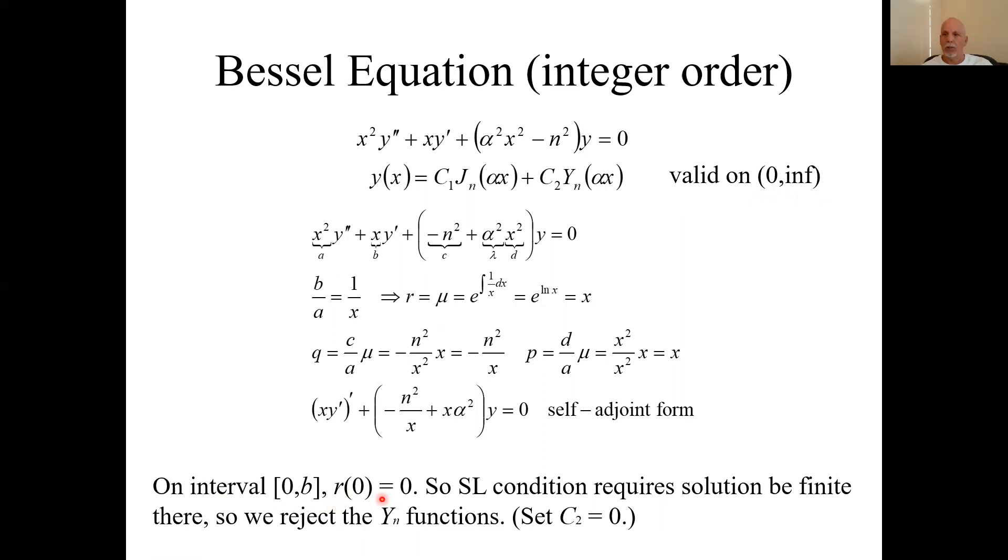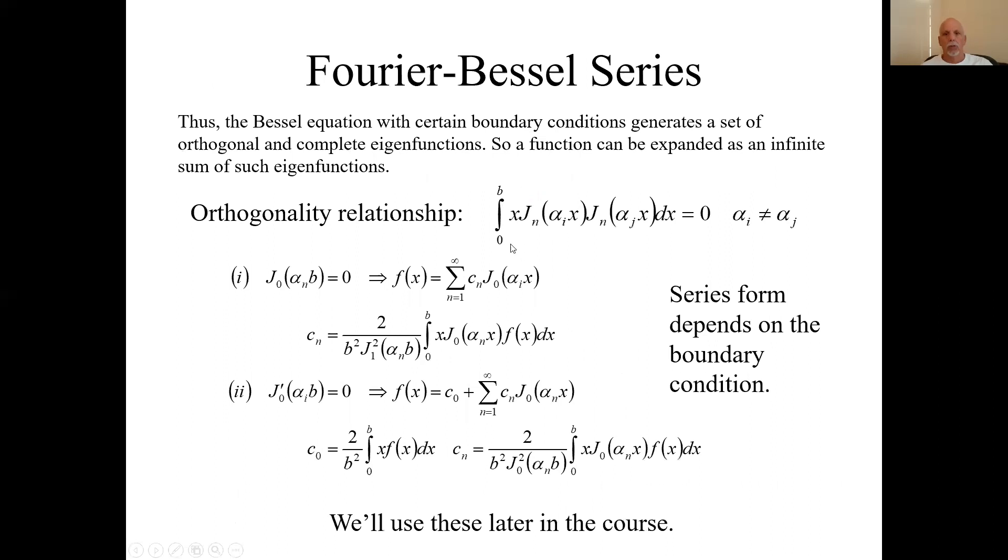Remember, Bessel functions of the second kind are not bounded at x equals zero. So we have to set this C₂ to zero and we're just left with Bessel functions of the first kind. Our eigenvalues are going to be these alphas, and the eigenfunctions are going to be Bessel functions of the first kind. So in general, on that interval from zero to B, here is our orthogonality relationship.